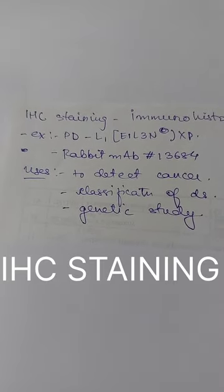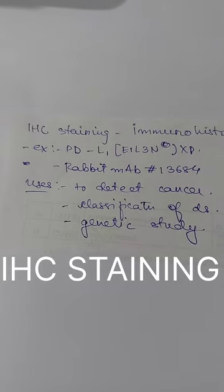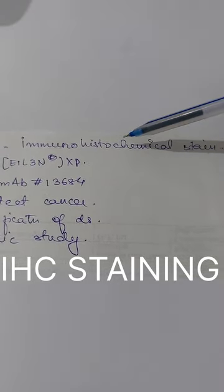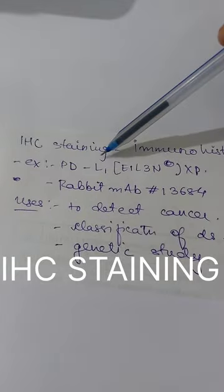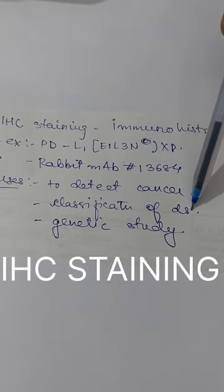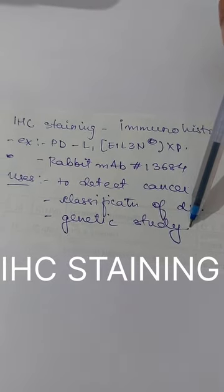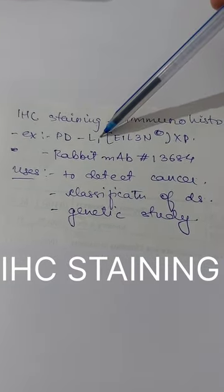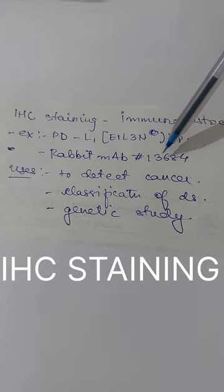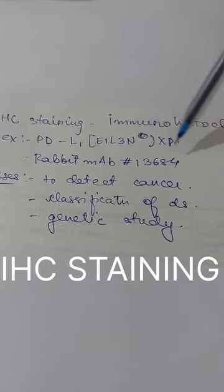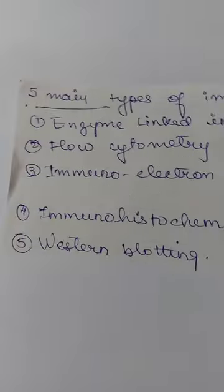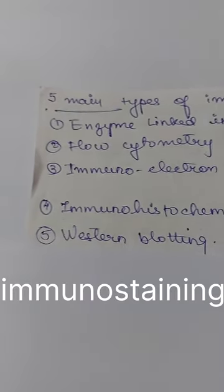A very important question: what is IHC staining — immunohistochemical staining? IHC stains are extremely important because they are used for detecting cancer, classification of diseases, and for genetic study of particular disorders. Examples of IHC stains include some with unusual names — you can remember rabbit, hashtag 13684, and PDL1. If you can remember the uses and examples of IHC staining, you are doing great.